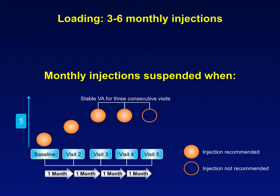According to the Restore study, it is recommended to initially inject patients until you achieve two consecutive visits of stable vision and a dry OCT. In other words, we keep injecting until we reach the maximum best corrected visual acuity on two consecutive visits. At that point, we stop injecting and follow the patient's visual acuity on a monthly basis.